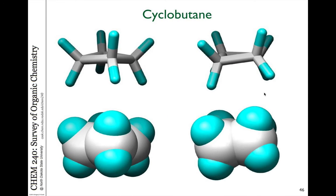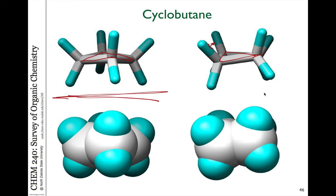Cyclobutane has one additional carbon, so the ring is just a little bit bigger, providing a tiny bit of ability to wiggle. The ring defined by those four carbons is not completely flat — it's actually bent just a little bit to alleviate a little bit of torsional strain. It's not perfect, but at least it's not as bad as cyclopropane. That's why cyclobutane ring strain is a little bit less than cyclopropane, though relative to larger rings it is still high in energy.